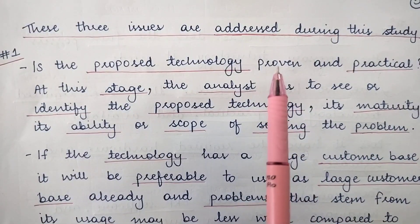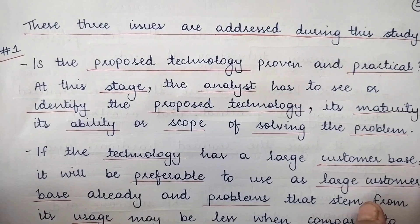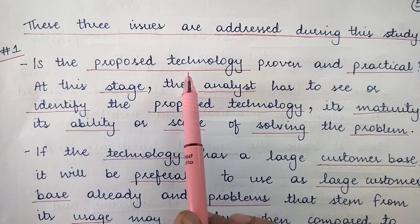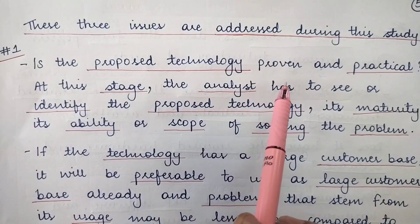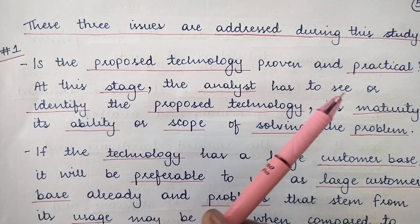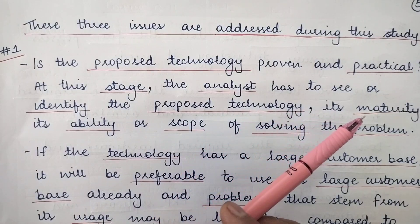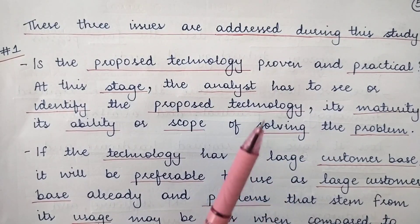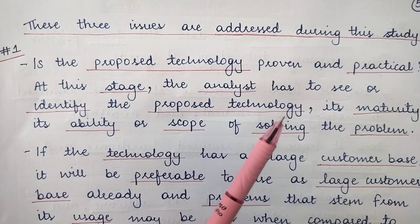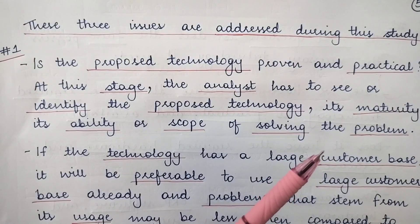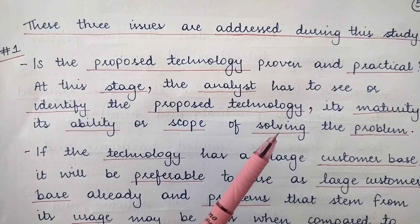There are basically three issues addressed during technical feasibility study. The first issue is: is the proposed technology proven and practical? Once a hardware and software proposal has been made, we need to find out if it is a proven and practical technology. The analyst has to identify the proposed technology's maturity and its ability to solve the problem, because the whole intent of developing a new information system is to solve a particular problem.